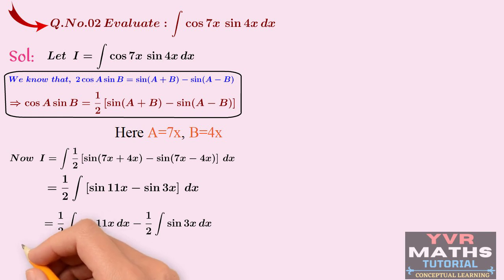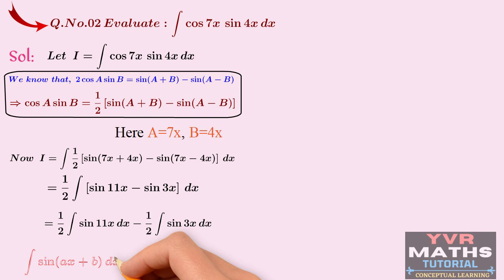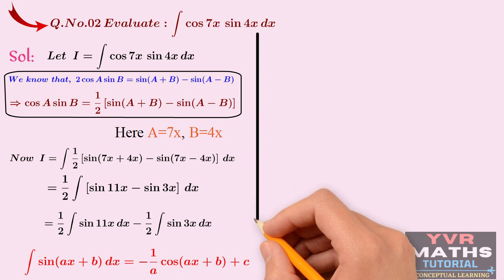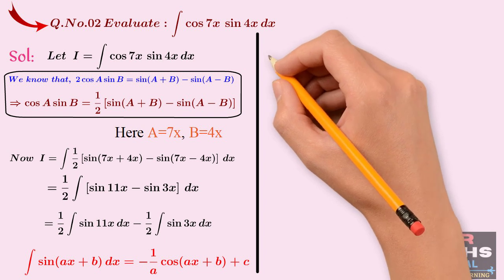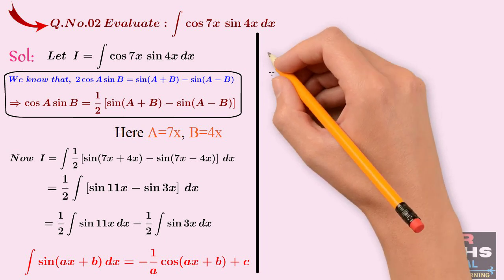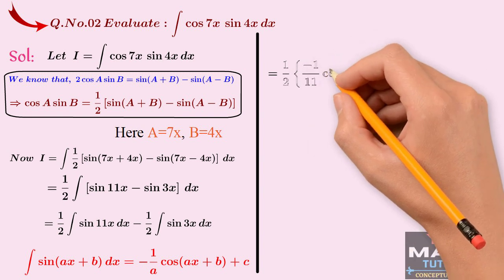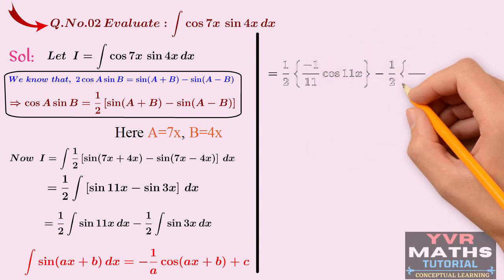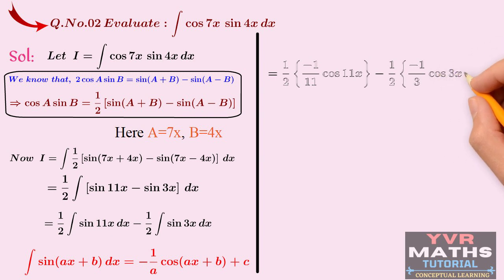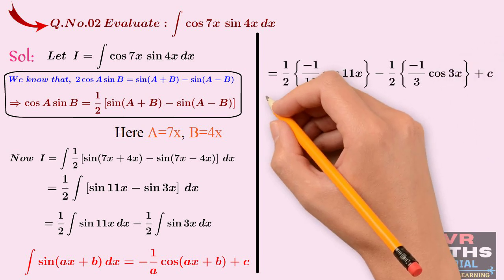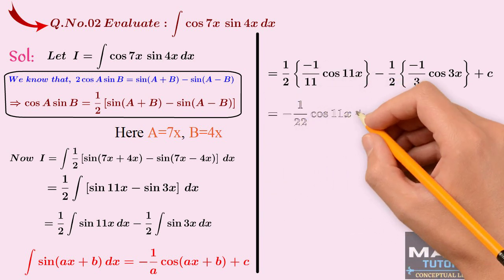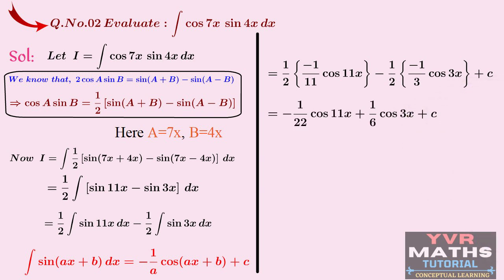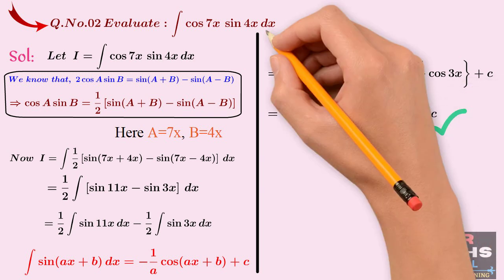Applying the standard integral formula, we get (1/2)(−1/11)cos(11x) − (1/2)(−1/3)cos(3x) + C. Simplifying, the final answer is −(1/22)cos(11x) + (1/6)cos(3x) + C. This is the final answer for the given integral, obtained through the actual step-by-step integration process.